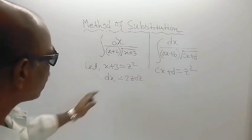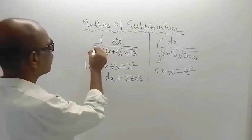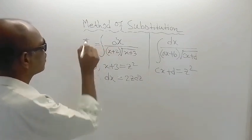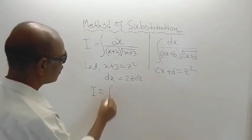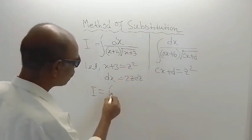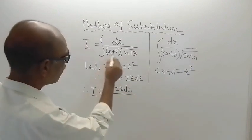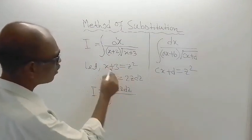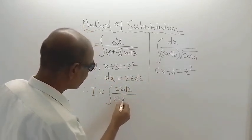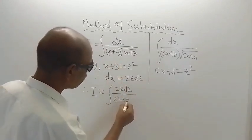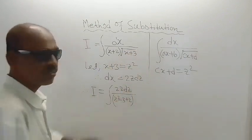So after getting this, you just put the substitution for dx here. Therefore, I is equal to, dx will be replaced by 2z dz. And here x plus 2 is there, so x is z square minus 3 from here. So z square minus 3 plus 2. And here under root of x plus 3 is there, and under root of x plus 3 is nothing but z.